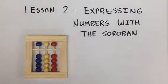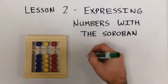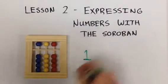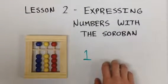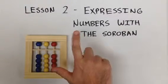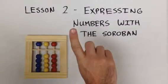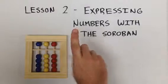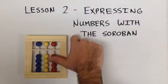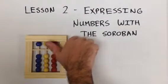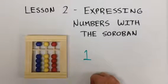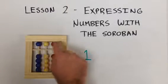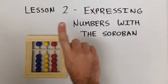So let's first look at how we do the number 1. To do the number 1, we only use two fingers: the thumb and the pointer finger. When adding, we use our thumb to push numbers up. When subtracting, we use our pointer finger to pull the beads away from the answer line. For the upper beads, we only use our pointer finger.